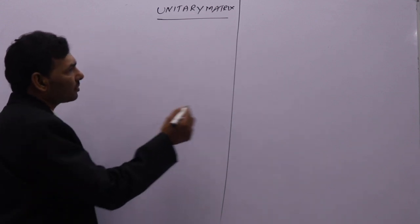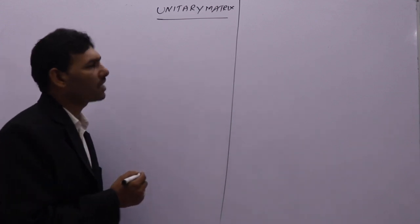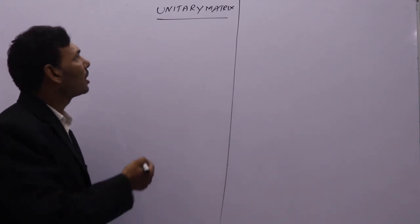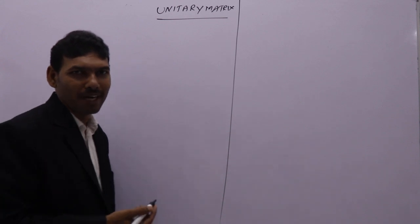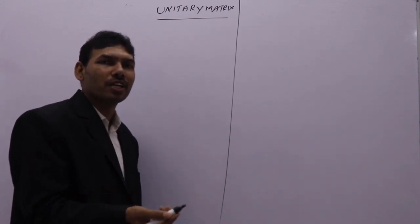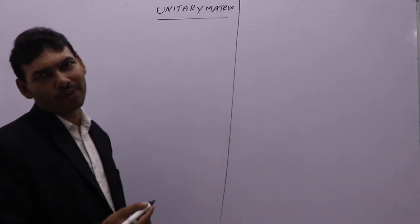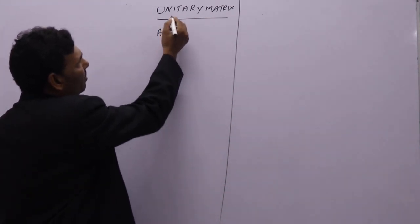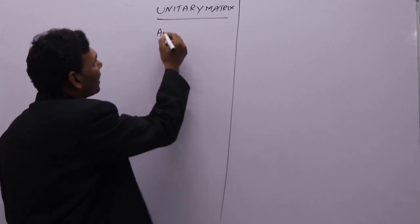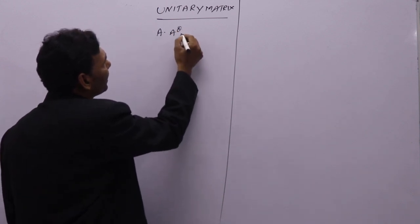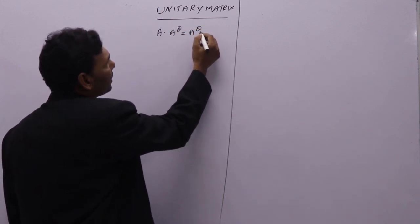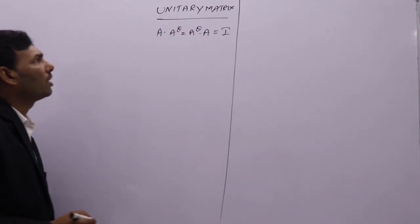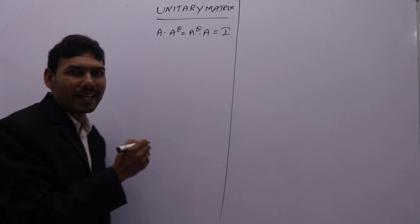Unitary matrix. Just now we discussed Hermitian and Skew Hermitian. This is just like orthogonal matrix. In real matrix, orthogonal matrix: A into A transpose equal to A transpose into A equal to I. Similarly here, in complex, a square matrix is said to be unitary if A into A power theta equal to A power theta into A equal to I. Then we call that one a unitary matrix.